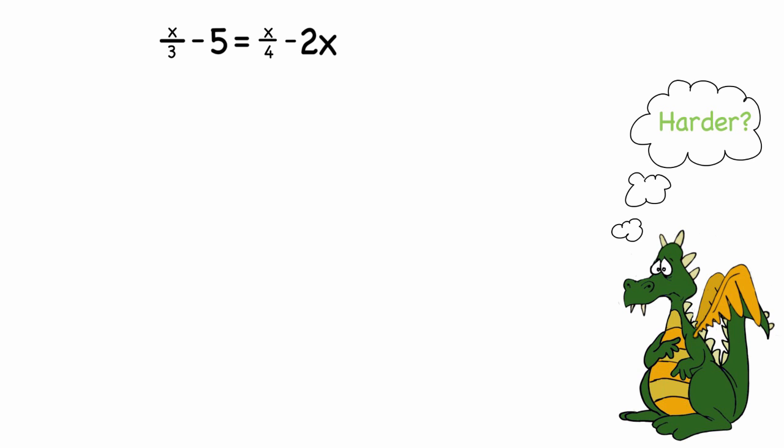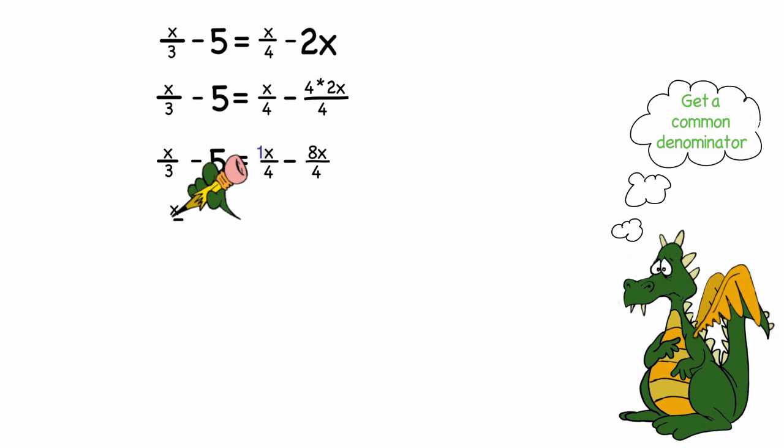To do this problem without clearing the denominators, I would first need to get a common denominator and when I subtract, I get x over 3 minus 5 is equal to negative 7x over 4. Then of course, I would subtract x over 3 from both sides of the equation.